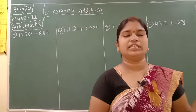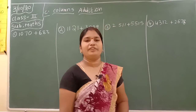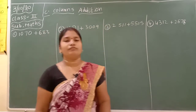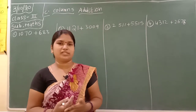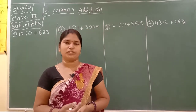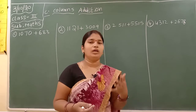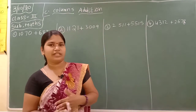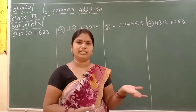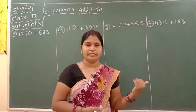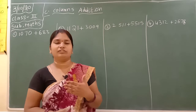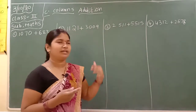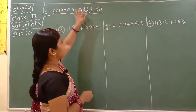Good morning children. Today third class mathematics. Today we have to discuss about how to add the given numbers. First of all, arrangement of numbers in the column wise is very very important. Yesterday in the previous class we done the given numbers in the column wise and added directly. But today our topic is we have to arrange the given numbers in column wise, then we have to add. Today our topic is column addition.